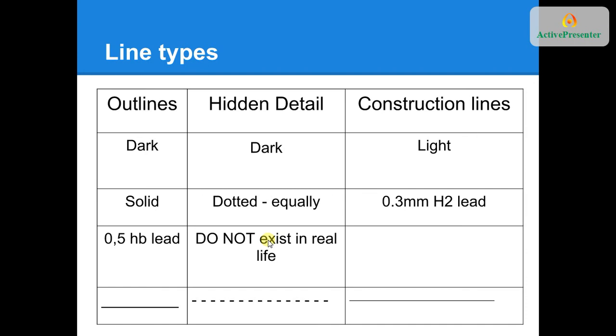We never want to commit to an outline unless we've actually finished our drawing, and we know that the lines are going to be there permanently. We darken them using a 0.5 HB lead.